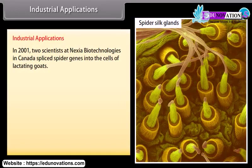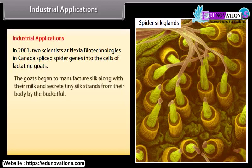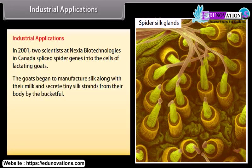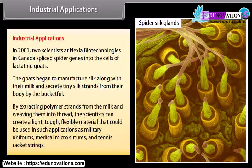Industrial Applications: In 2001, two scientists at Nexia Biotechnologies in Canada spliced spider genes into the cells of lactating goats. The goats began to manufacture silk along with their milk and secrete tiny silk strands from their body. By extracting polymer strands from the milk and weaving them into thread, the scientists created a light, tough, flexible material that could be used in applications such as military uniforms, medical micro sutures, and tennis racket strings.